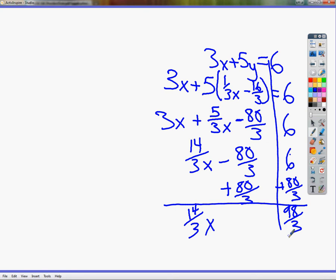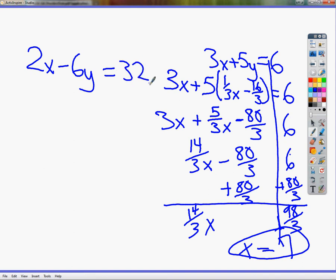I'm going to get 14 over 3 x is the same as 98 over 3. Now, in order to get rid of it, or to finally finish out what I'm going for here, I'm going to just divide 98 thirds by 14 thirds. And I get x is equal to 7. Now that I know that x is equal to 7, y is very easy to find. I'm going to go back into my other equation that I had before. Now that I know that x is 7, all I have to do is plug it in.